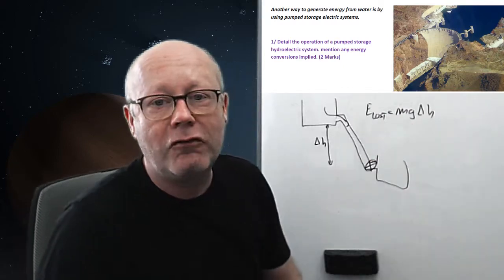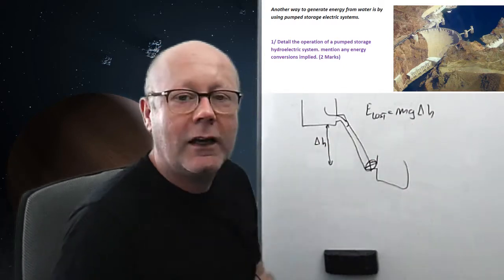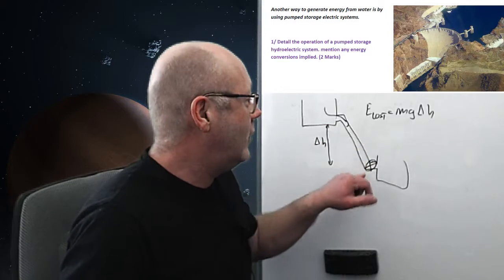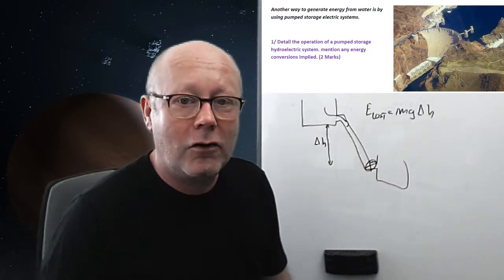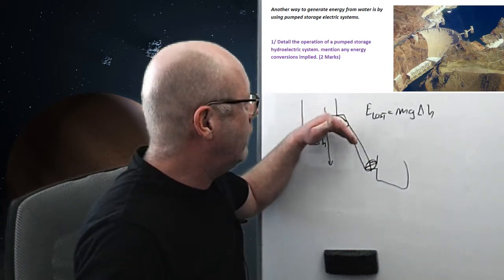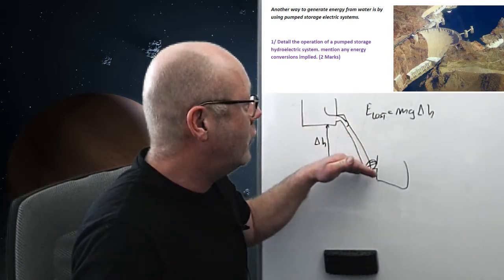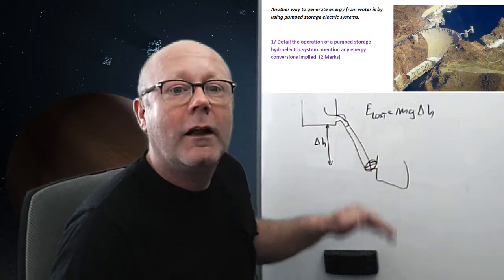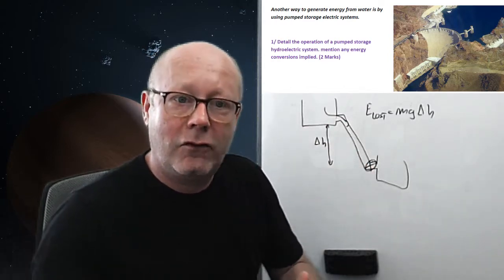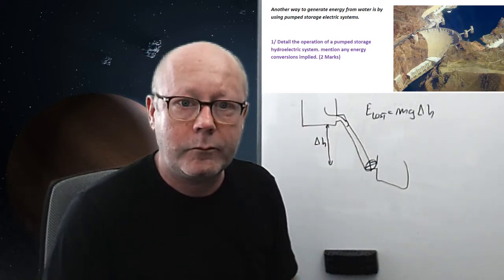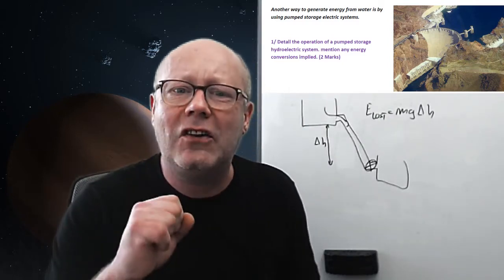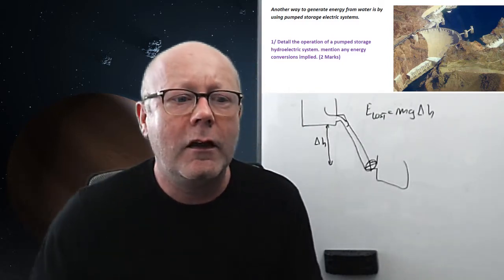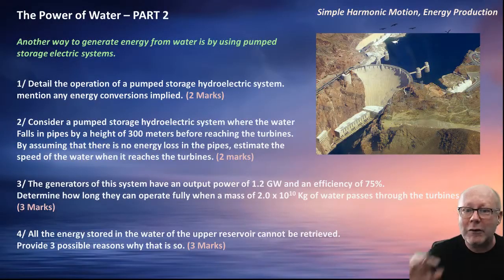G is the gravitational field strength and delta H the difference in height. Now this energy will be converted by the turbines into electrical energy. So the water gains kinetic energy, loses its gravitational potential energy, and in the turbines this kinetic energy is transferred to electrical energy. So that's the principle of a dam. We're going to look at something slightly different.